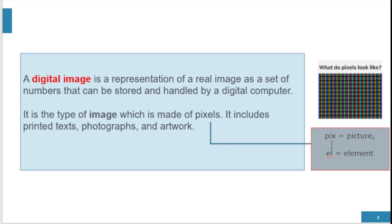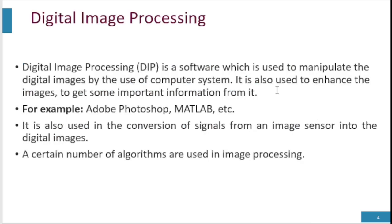Now, what is a pixel? Pixel consists of two words: first is 'pix,' which equals pictures, and second is 'el,' which equals element. So the combination of elements of a picture is known as a pixel. Pixels are the small units of a picture that combine together to make a picture.